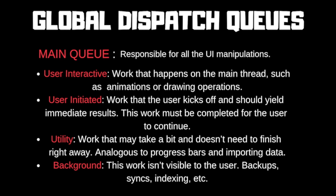The QoS levels are divided by priority. The first is user-interactive: work that happens on the main thread, such as animations or drawing operations. The second is user-initiated: work that the user kicks off and should yield immediate results — this work must be completed for the user to continue. The third is utility: work that may take a bit and does not need to finish right away, analogous to progress bars and importing data. The fourth is background: work not visible to the user, such as backups, syncs, and indexing.